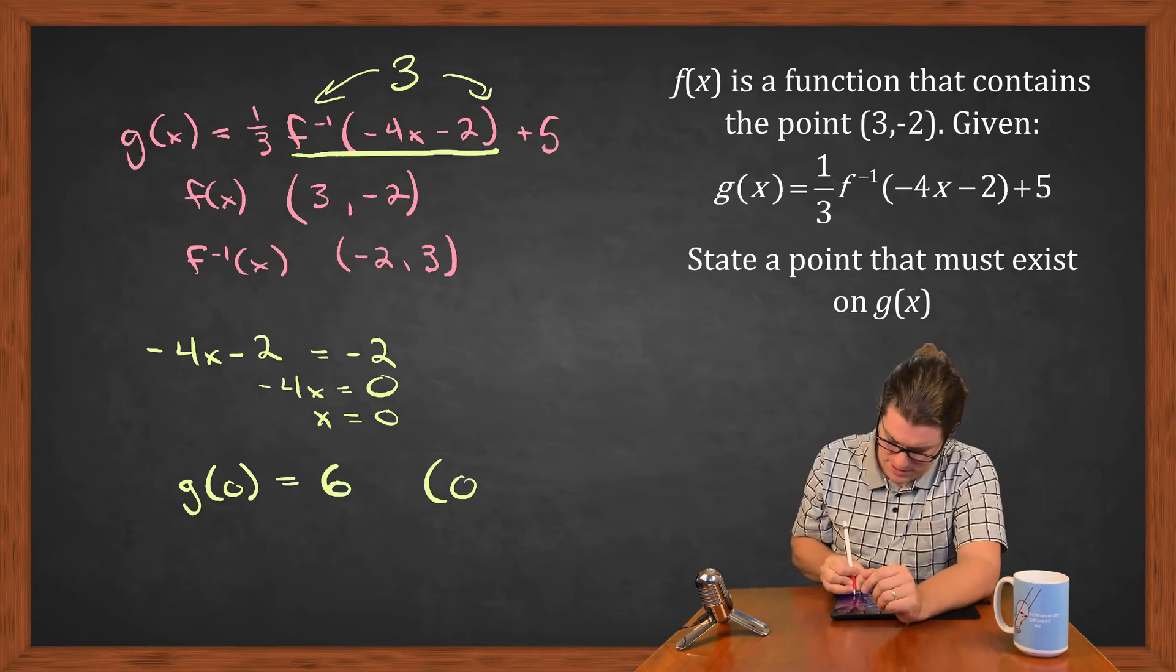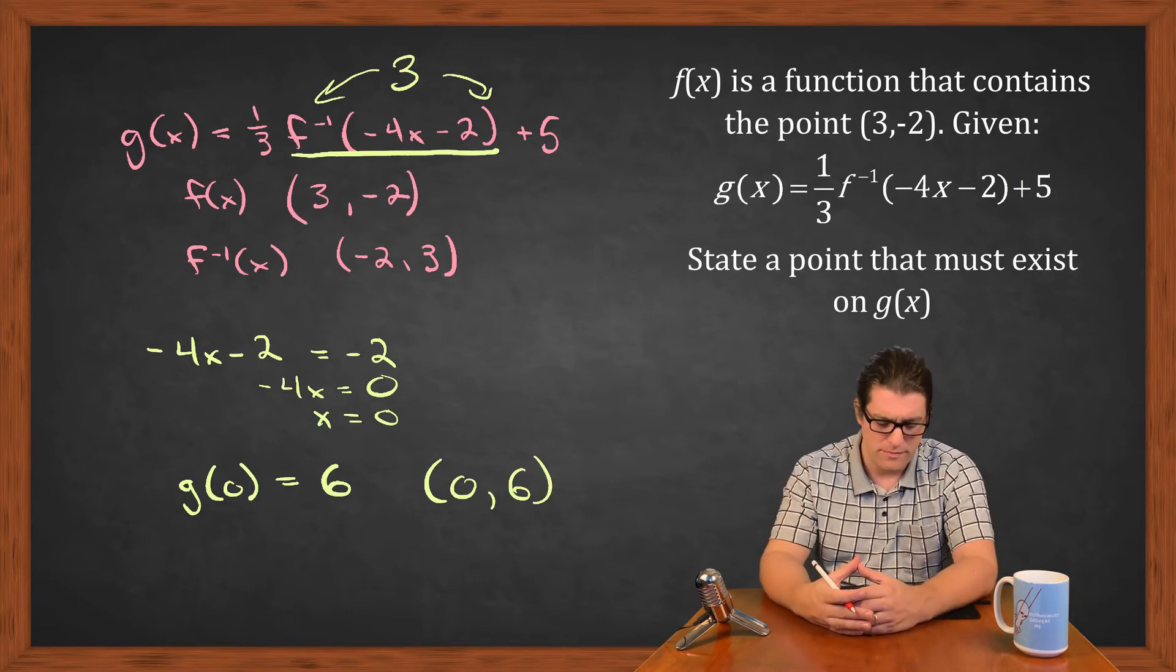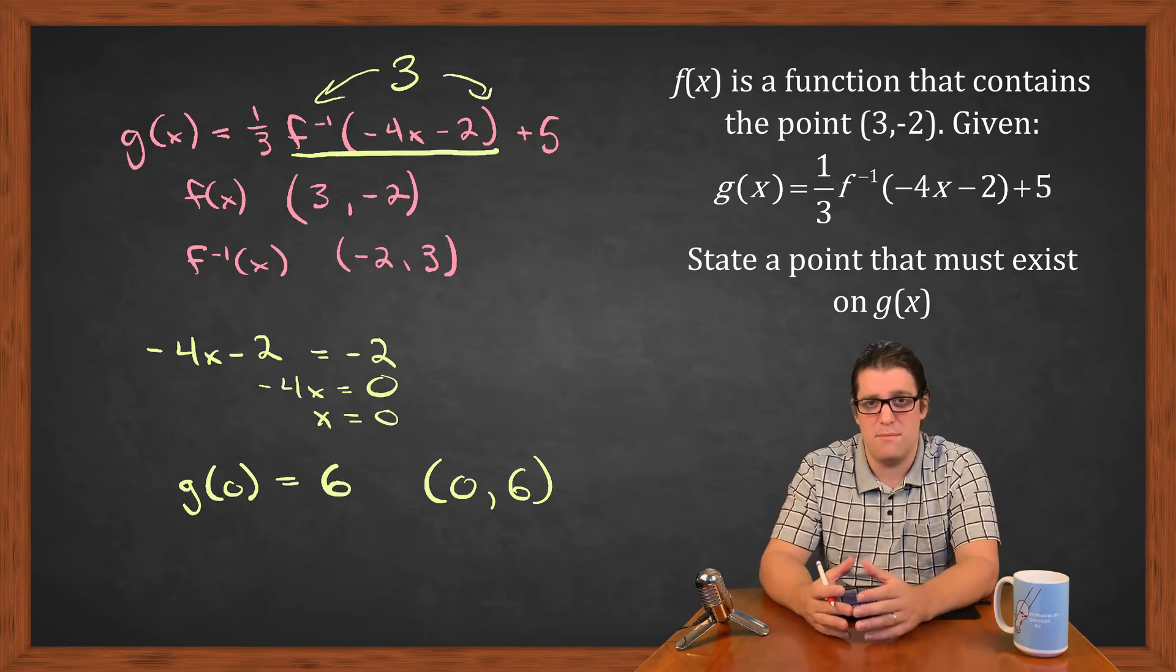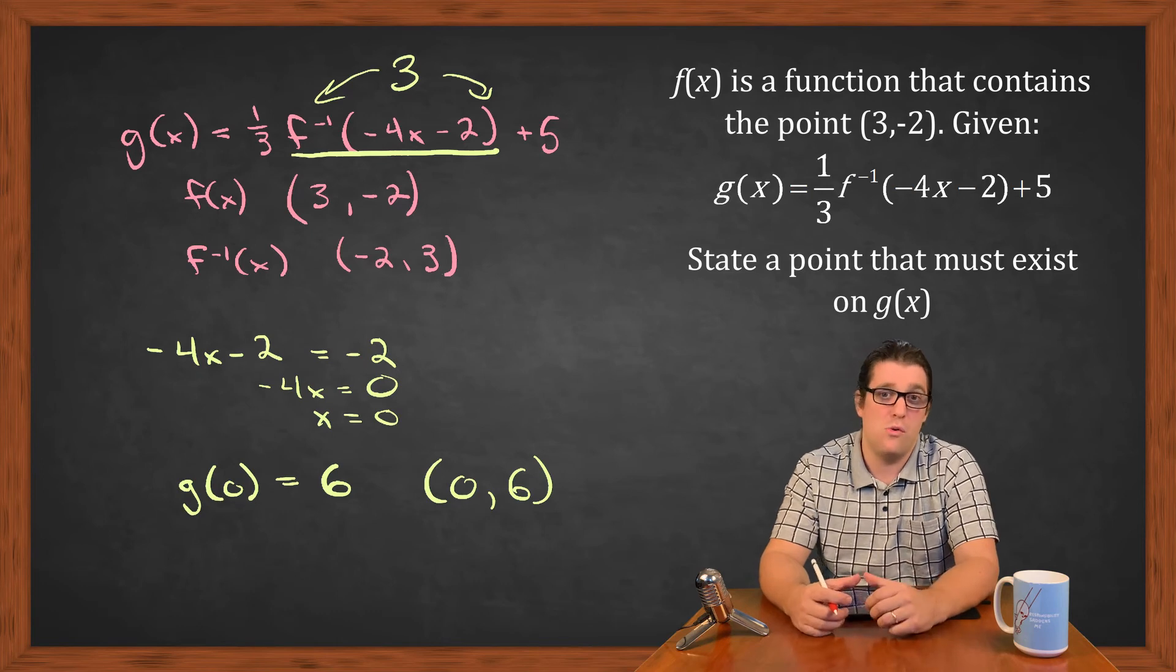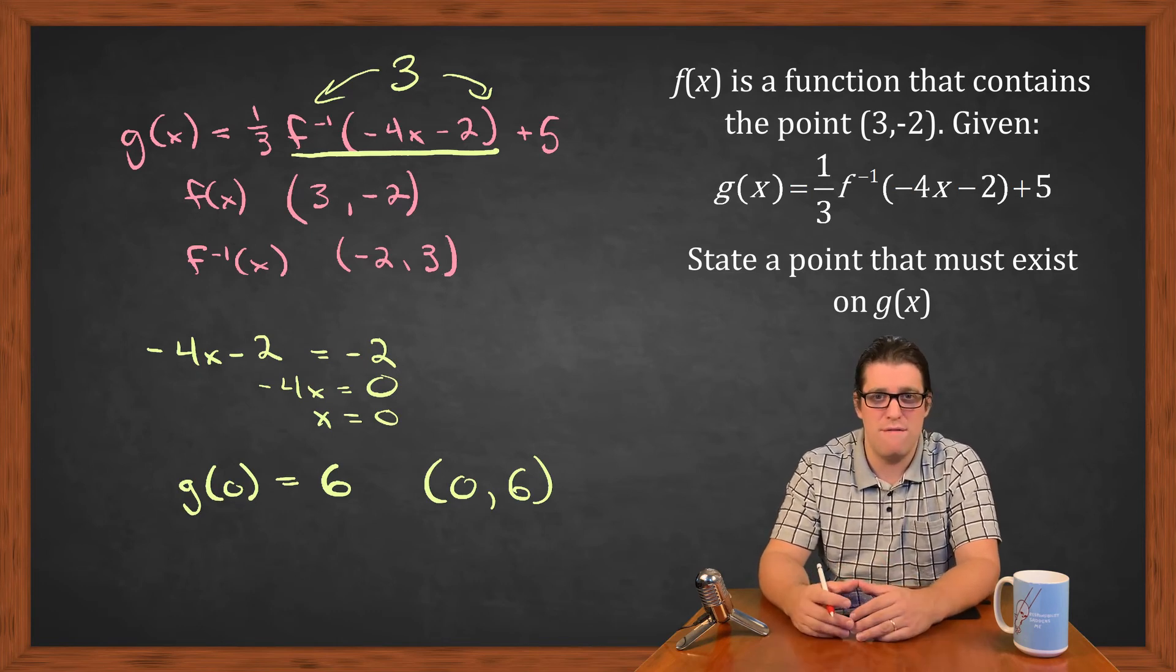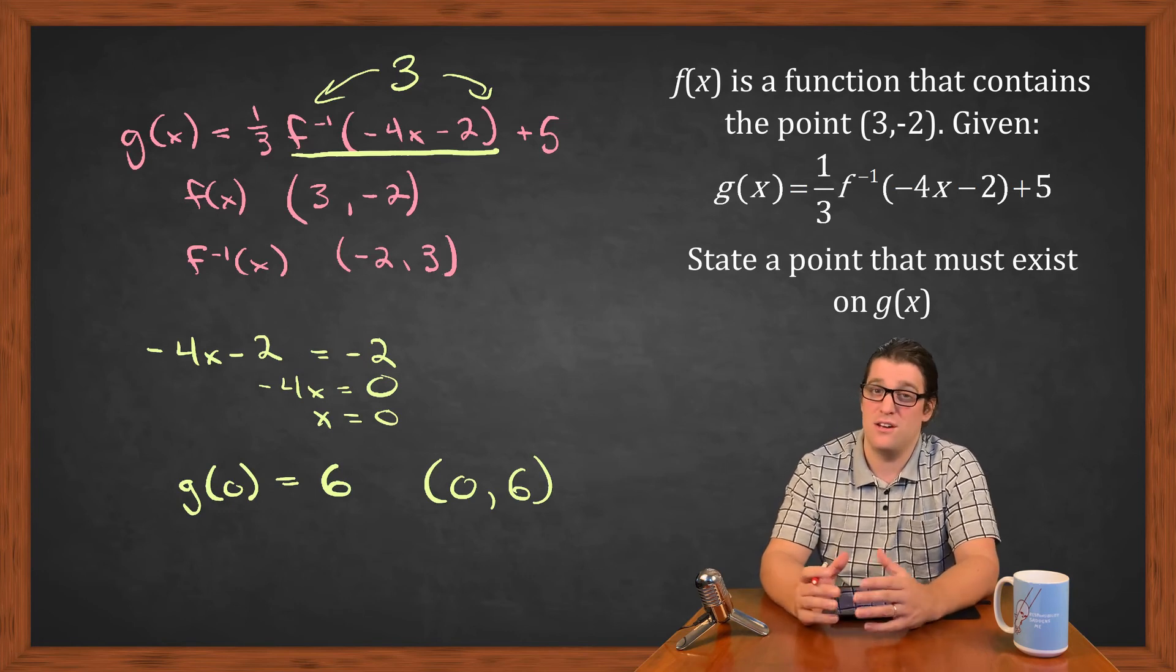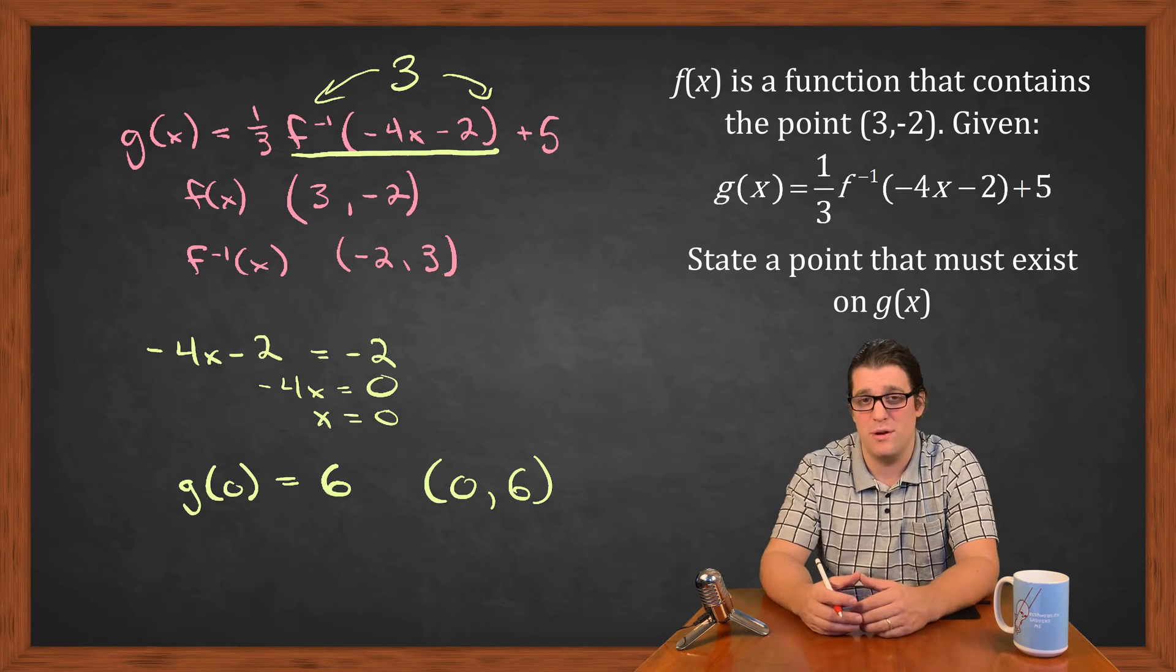So that's basically the way that I approach it. I try to set my inner argument equal to the only value I know the behavior of, so I figure out what my x has to be to create that argument, and then I know what the value is because that's the y value of the single point that I know.